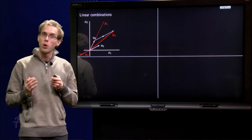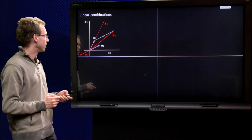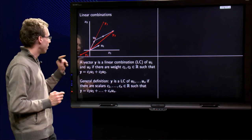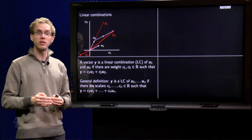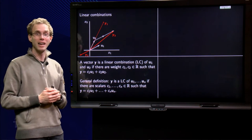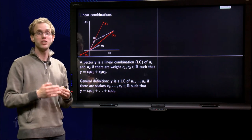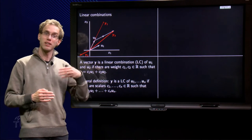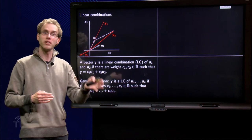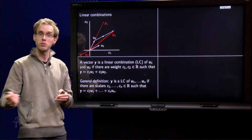So, what is a linear combination exactly? A vector y is a linear combination of u1 and u2 if you can make y using weights c1 and c2, and the vectors u1 and u2, if you can get y using c1 times u1 plus c2 times u2.